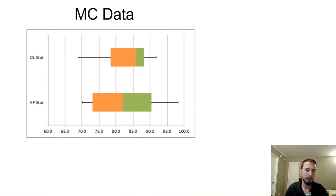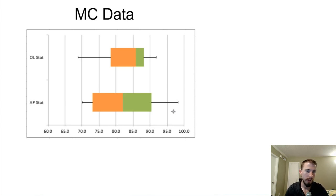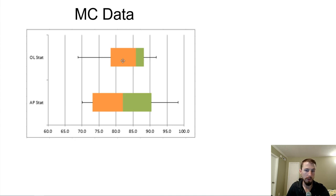So this is the Mastery Connect data for the multiple choice section of the test. On the top we have my on-level stat class, sixth hour, and then my AP stat class. If we want to analyze just a general summary — which is nice about a box plot — it's the five-number summary. You can see what the minimum score was, the maximum score, and whether you were higher than the median or within the interquartile range.